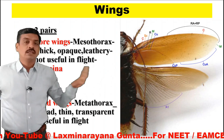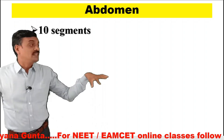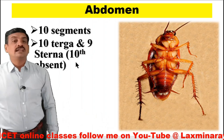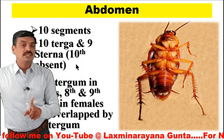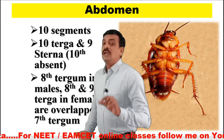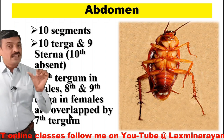The abdomen of the cockroach consists of ten segments. These ten segments are covered dorsally with ten tergal plates and ventrally with nine sternal plates — the tenth sternum is absent. The eighth tergum in males, and the eighth and ninth terga in females, are overlapped by the seventh tergum. Therefore, nine terga are visible in the male cockroach, whereas only eight terga are visible in the female cockroach.